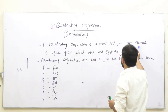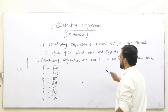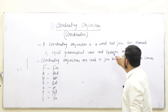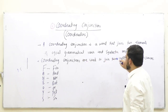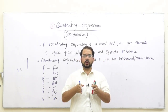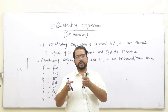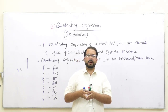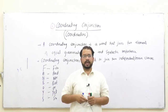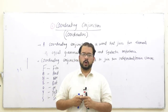A coordinating conjunction is a word that joins two elements of equal grammatical rank and syntactic importance. Here we have two important points: one is equal grammatical rank and the other is syntactic importance. Grammatical rank ka matlab yeh hai ke iski zariye se hum two independent clauses ko join kar sakte hain. Isi tarah hamare paas agar do adjectives aaenge to woh dono adjectives equal rank ke honge. Equal rank ka matlab kya hai, jab hum is pe aur discussion karenge to aapka concept iske bare mein clear ho jayega.